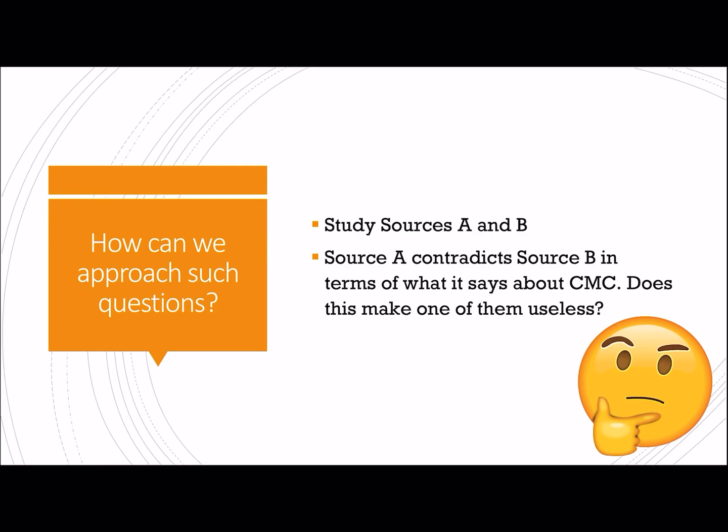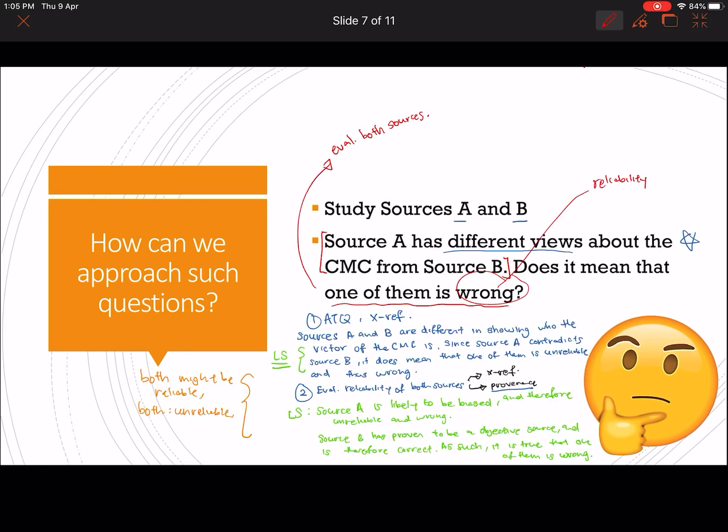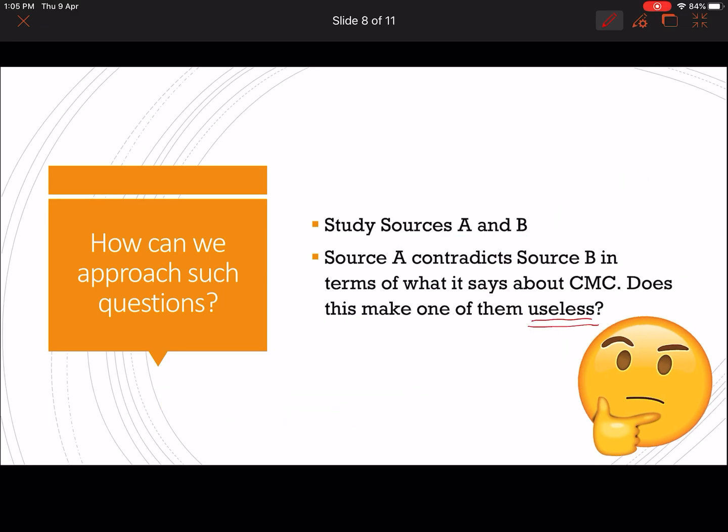Study sources A and B, source A contradict source B in terms of blah blah blah. This is the exact same starting line as our previous question, the only difference here is that it says, does it make one of them useless? So do you use the exact same steps as the previous questions? Yes. Is your linking statement the same? Not exactly.